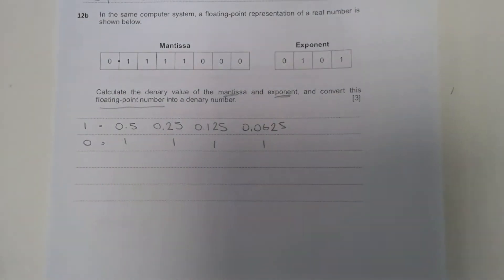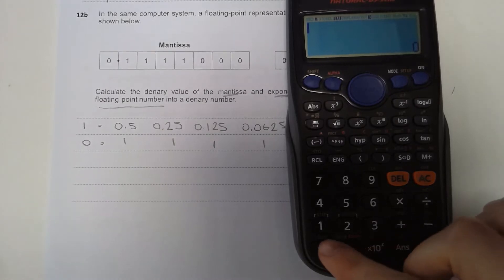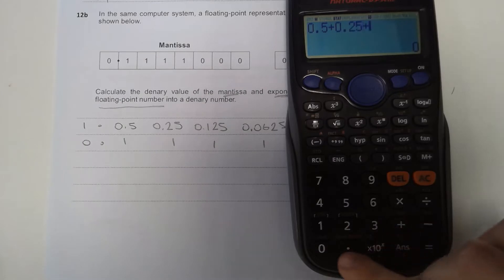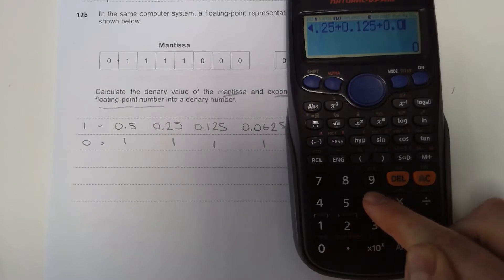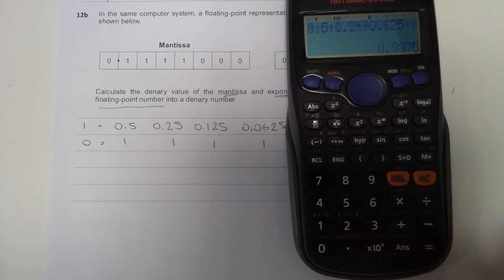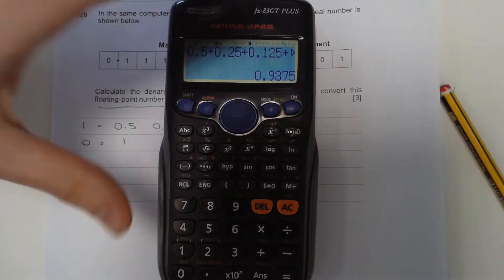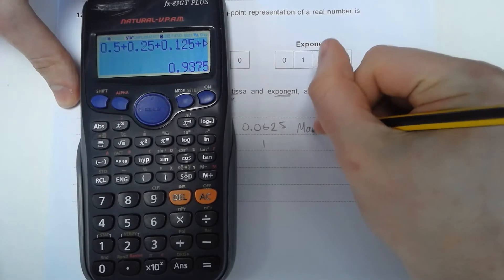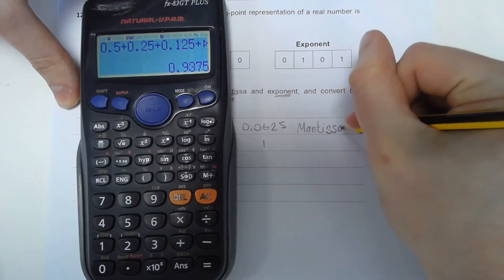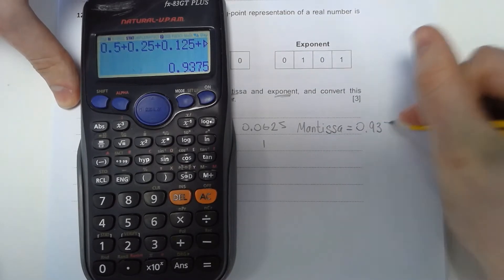If we add these values together using our calculator, this is the answer we get for our mantissa. So we have 0.9375.